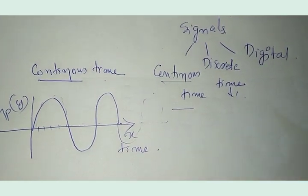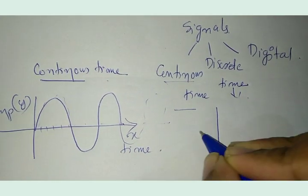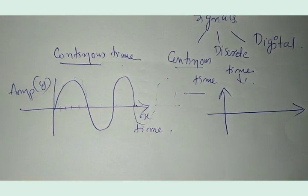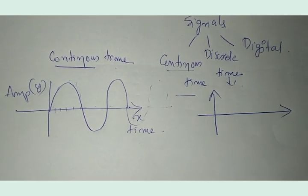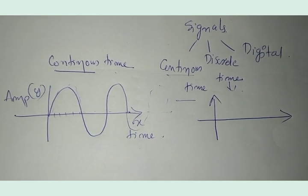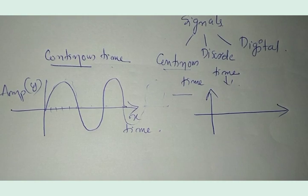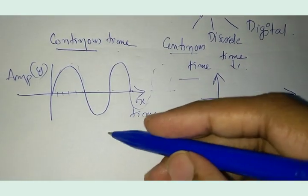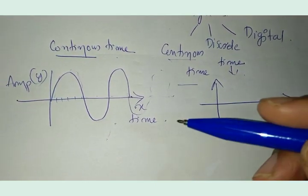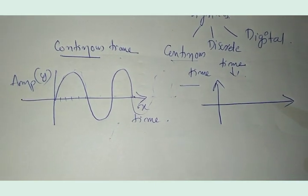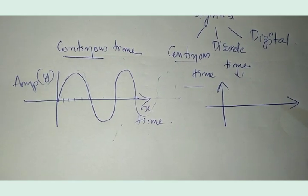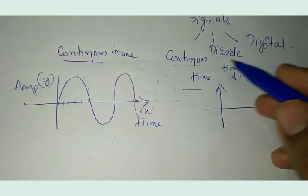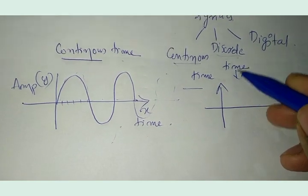Now, what is a discrete time signal? A discrete time signal is actually obtained by sampling a continuous time signal. I will explain what sampling is in my next video. A discrete time signal is a sampled version of the continuous time signal, and it has values only at discrete time points.